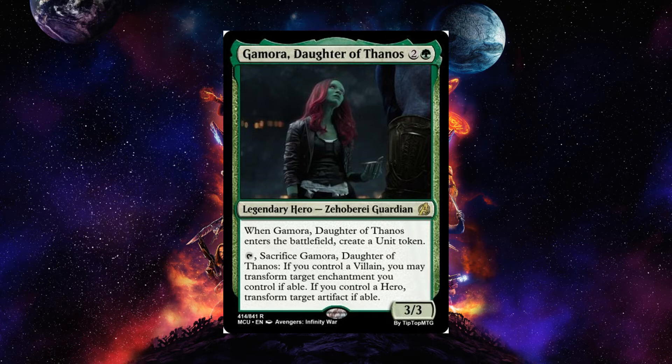Gamora, Daughter of Thanos, is a three-cost green legendary hero guardian. Whenever she enters the battlefield, create a 3-3 unit token. You can tap and sacrifice her — if you control a villain, you may transform a target enchantment you control into a fable; if you control a hero, transform a target artifact into a fable. So if you're Star-Lord you can sacrifice Gamora to turn someone's artifact back into a journey, cutting off access to a stone; if you're Thanos, you can sacrifice her to turn an enchantment into an artifact. Are you Peter Quill or are you Thanos? Very interesting design.